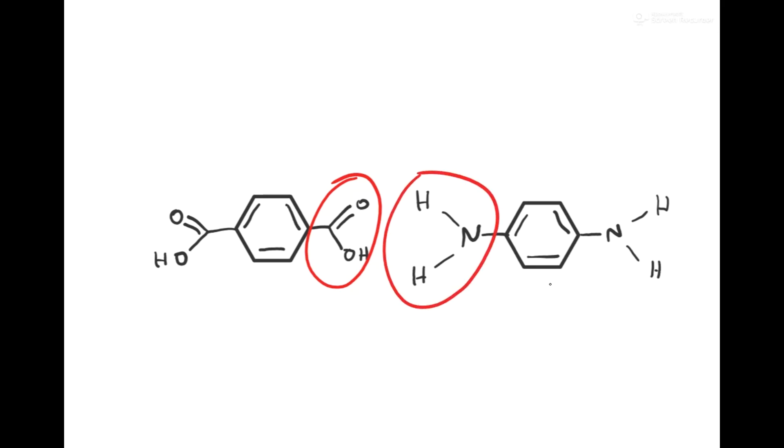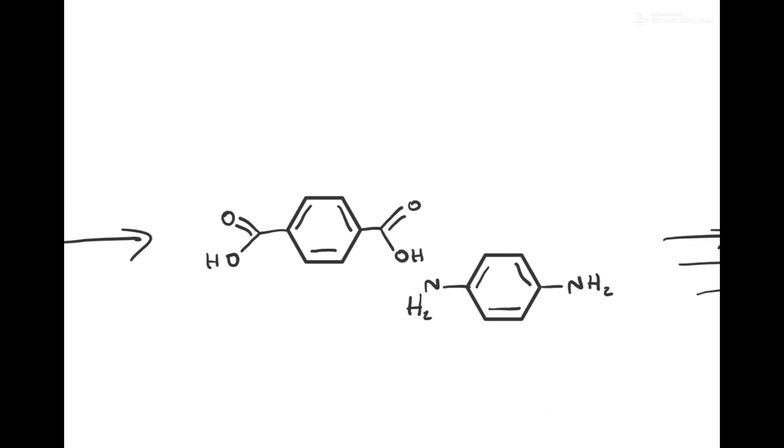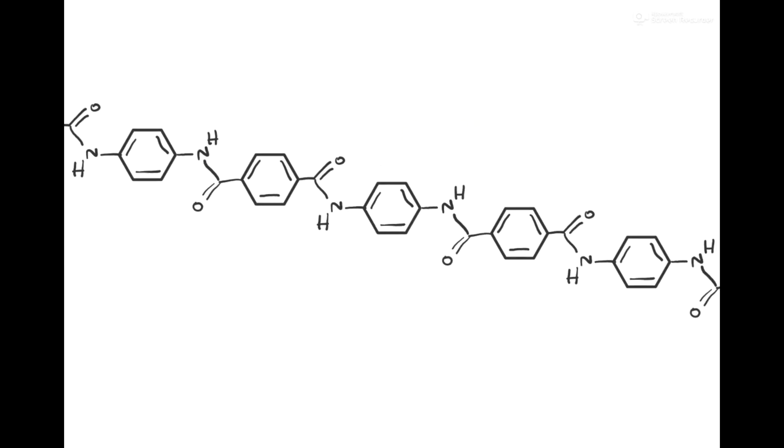Step growth polymerization involves the combining of two reactive functional groups in a condensation reaction, forming a small molecule, usually water, as a by-product. Both monomers must have functional groups at each end of the molecule so that a long chain can form, as shown in the example of the formation of Kevlar from 1,4-diaminobenzene and benzene-1,4-dicarboxylic acid seen here.